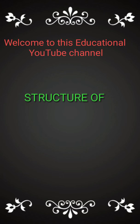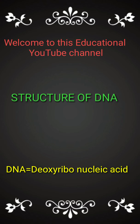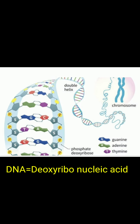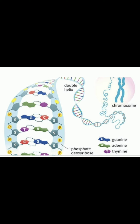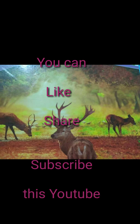Welcome to my YouTube channel. Today I will explain simply about the structure of DNA. DNA, deoxyribonucleic acid, is a complex biomolecule composed of two polynucleotide chains that coil around each other to form a double helix. It carries genetic instructions for the development, functioning, growth, and reproduction of all known organisms and many viruses.